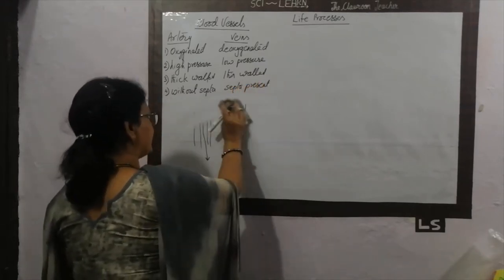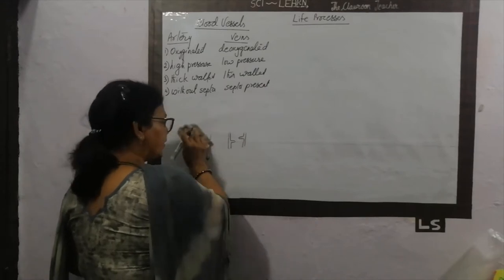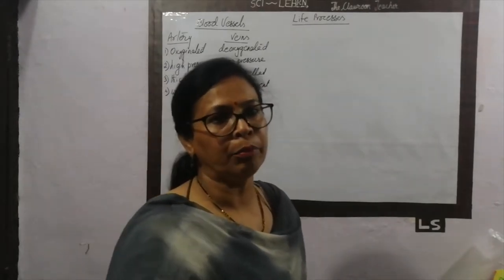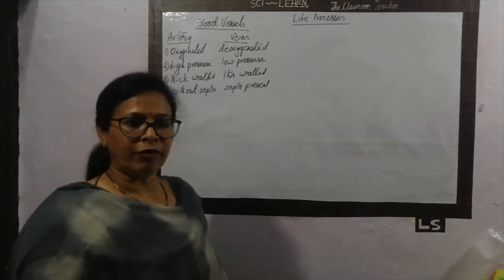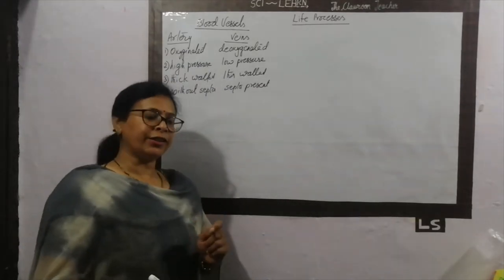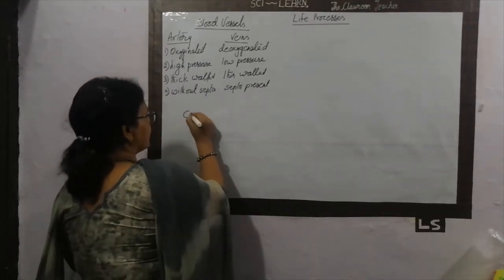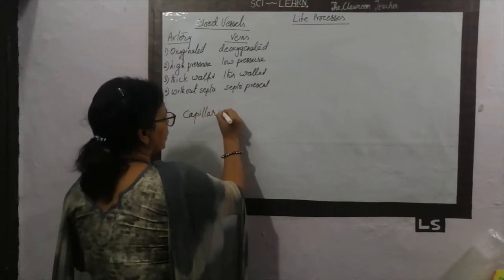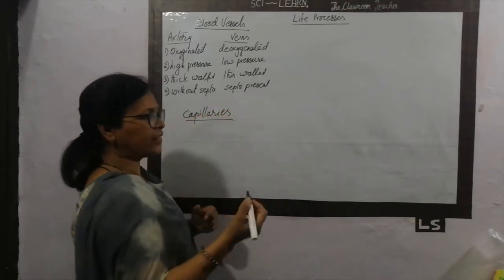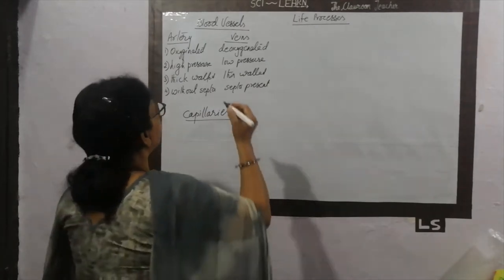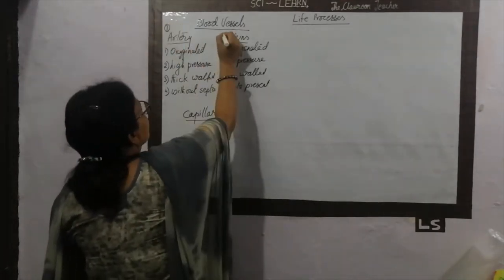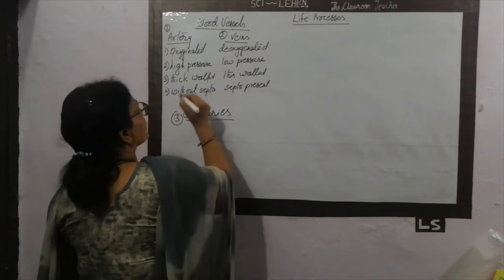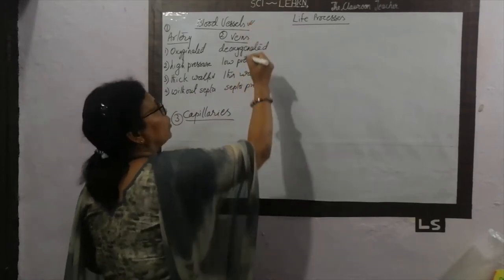So the system of blood: arteries always carry pure blood and veins always carry impure blood. Veins and arteries further divide into capillaries. There are three channels: the first is the artery, the second is the vein, and the third is the capillary. These are collectively called blood vessels.